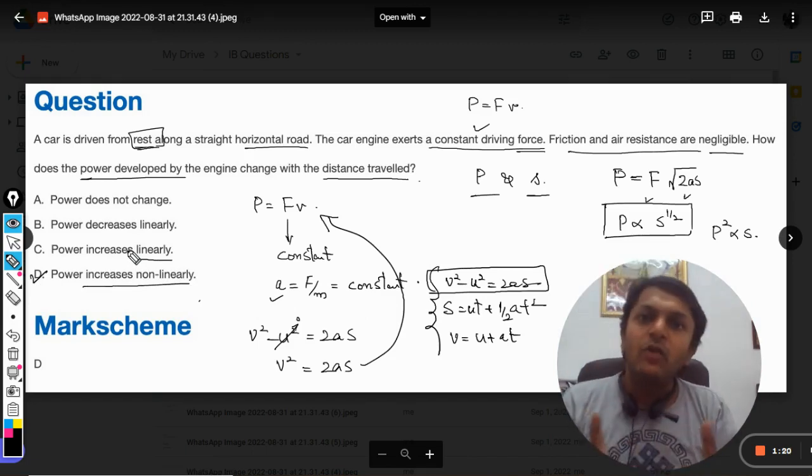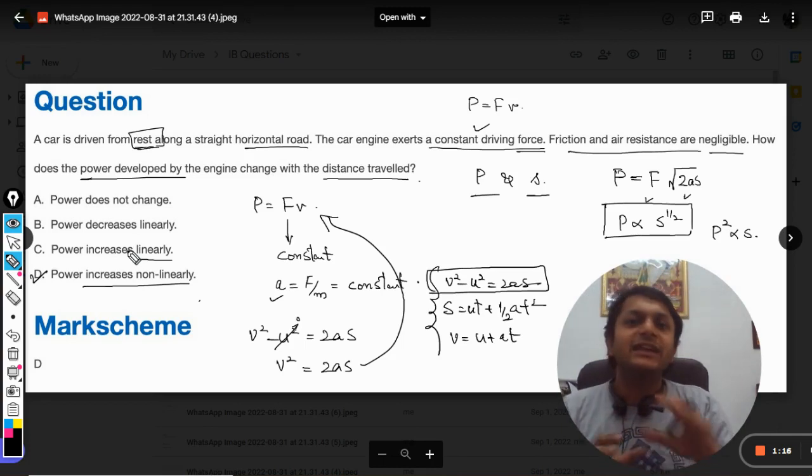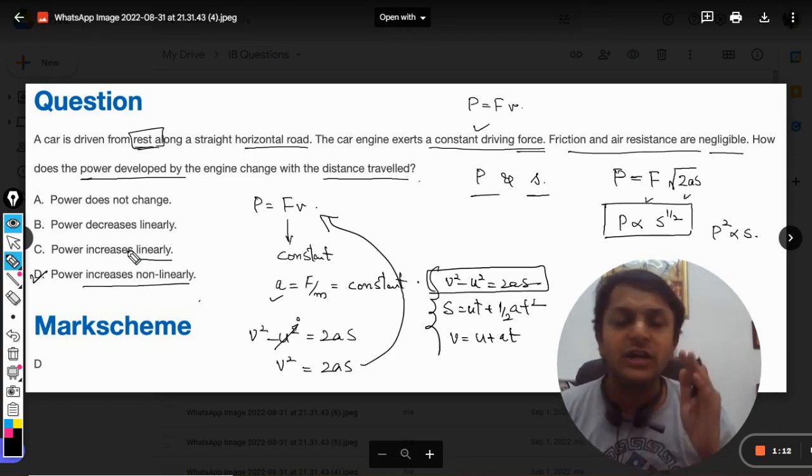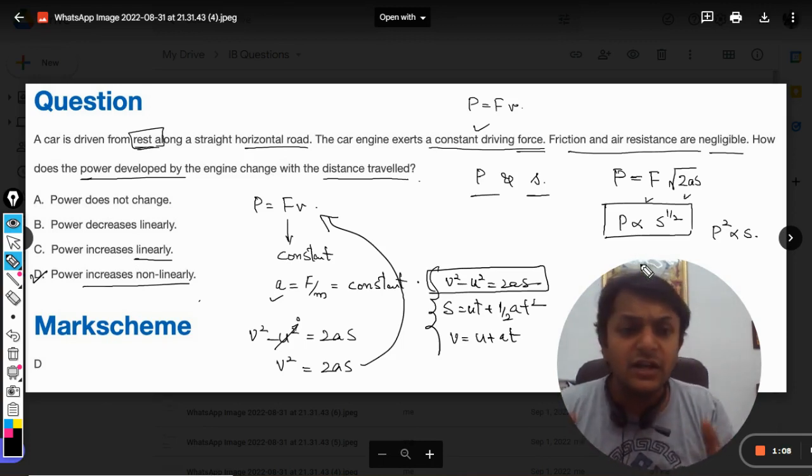By the way, linear means the graph between the two will be a straight line, that power is directly proportional to displacement. But non-linear means it can be parabola, it can be hyperbola, anything but not a straight line.